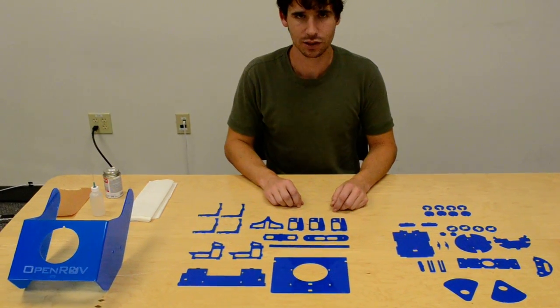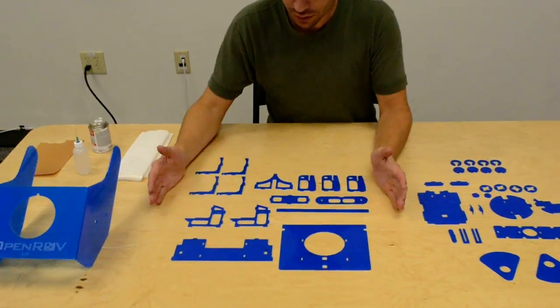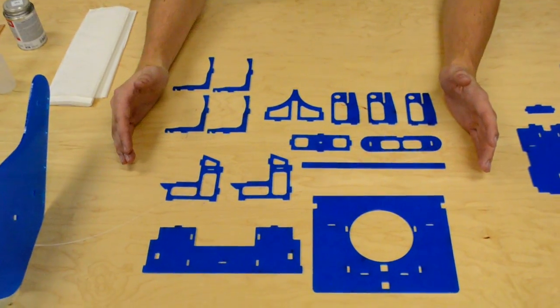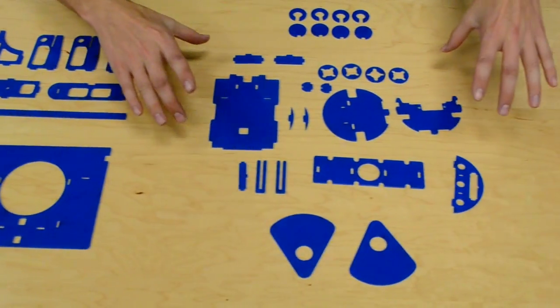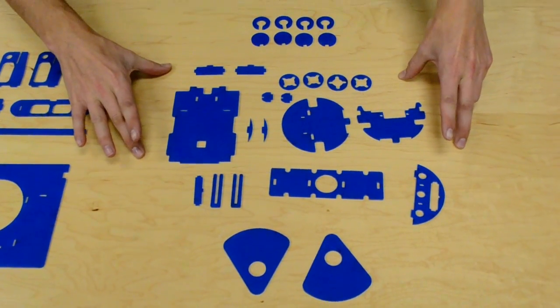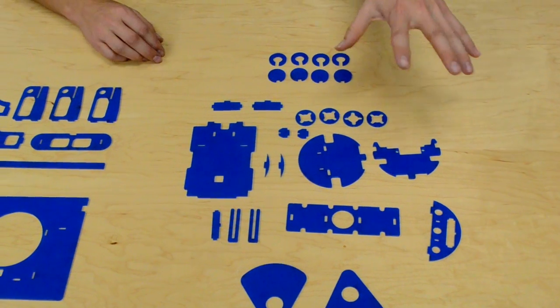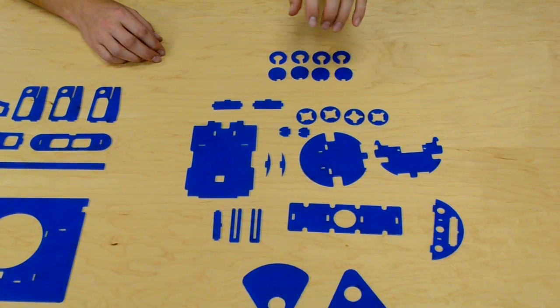There are kind of three main sections here: the parts used for the inner structure that you mount the motors and things onto, the stuff for the electronics chassis which is right here, and then we've put the other spare parts around it.